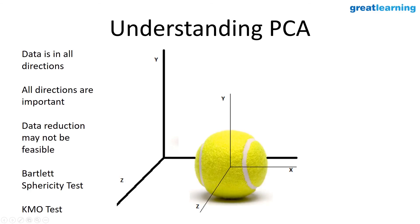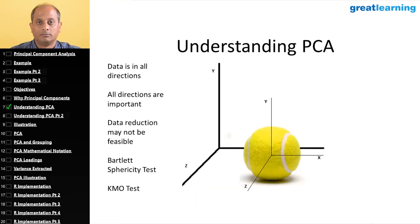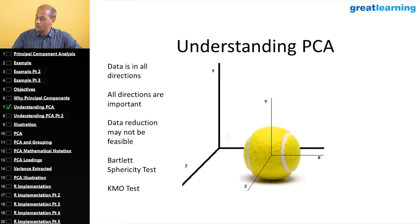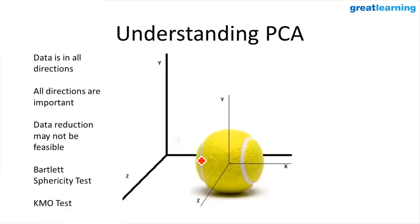How do we understand PCA? Consider a spherical ball that is homogeneous in every dimension — whichever direction you go, you cover the same distance from the center to the periphery. Information is present in every direction, and all directions are equally important. When data is in all directions with the same amount of information in each, data reduction may not be possible. This is why we need to first understand how to test the sphericity of data.